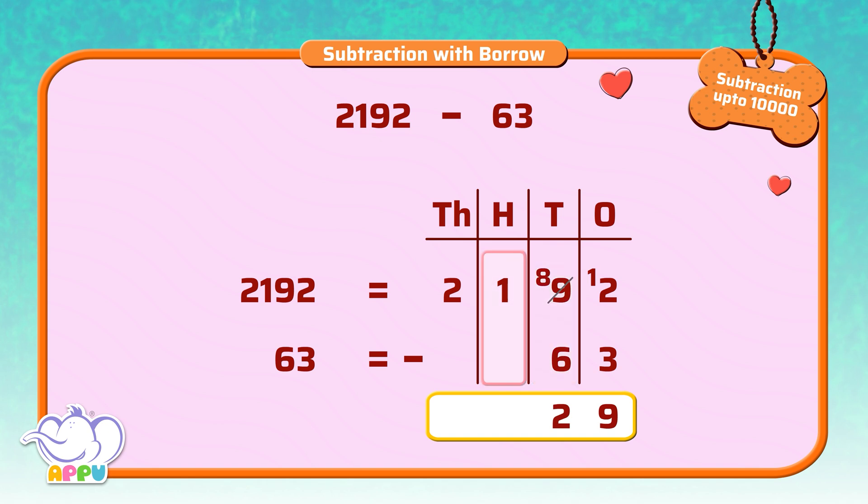And in the hundreds place, we have a 1 and no number, so we take it as a 0. So 2 minus 0 is equal to 1. Finally, in the thousands place, we have a 2 and no number, so we take it as 0. So 2 minus 0 is equal to 2.